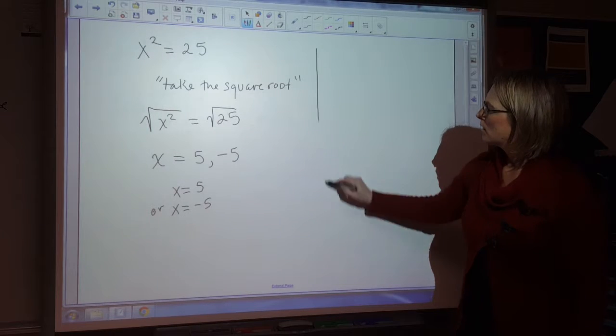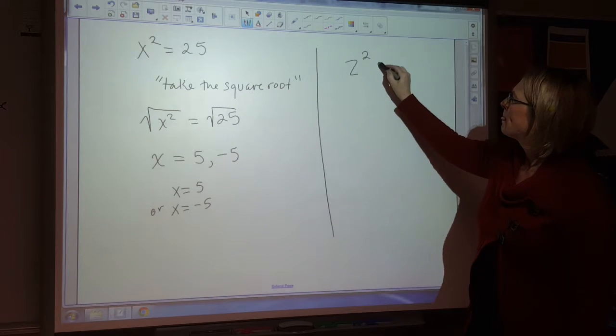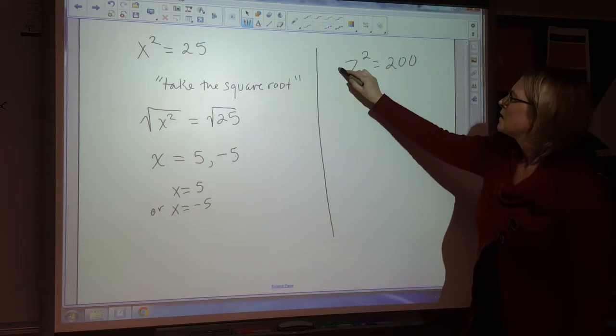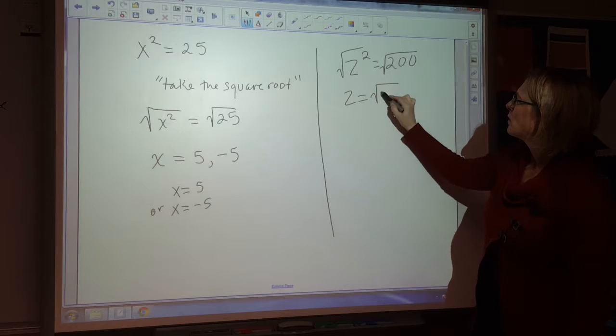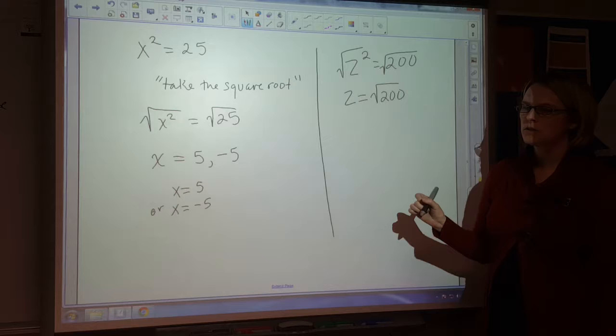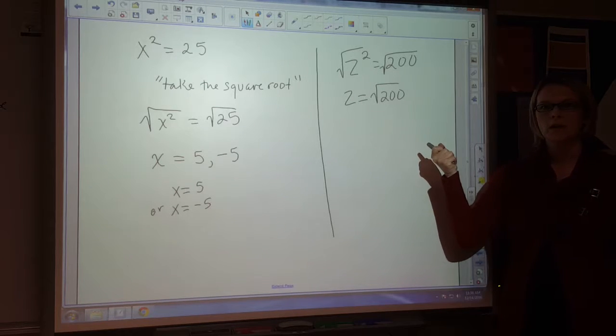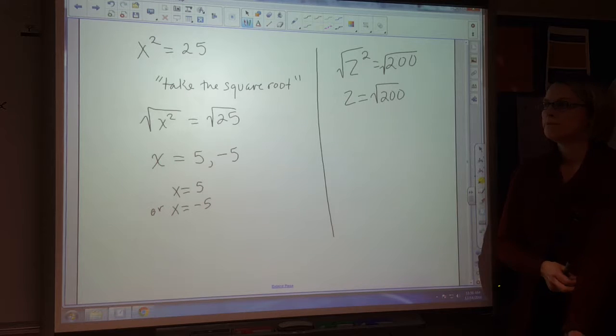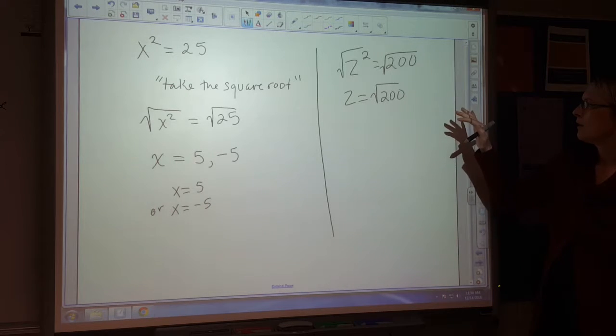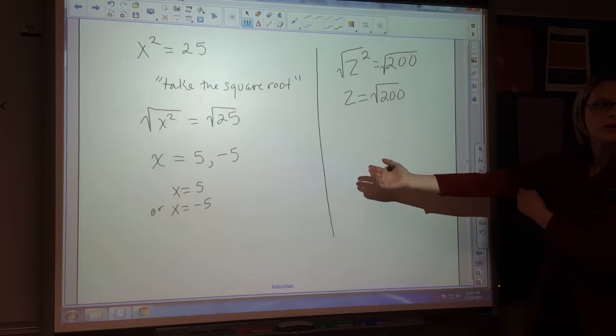So now if I have z squared equals 200, and I take the square root of both sides, z equals the square root of 200. What I'm going to do to solve this, I'm going to simplify the radical. So I'm looking for perfect squares. So I'm going to find the factors of 200. So what are some factors of 200?